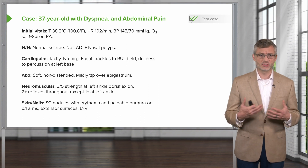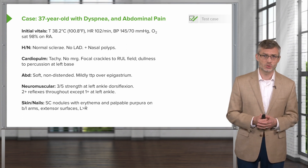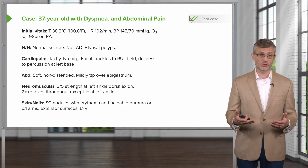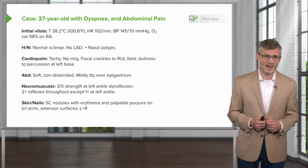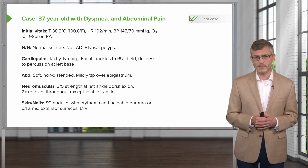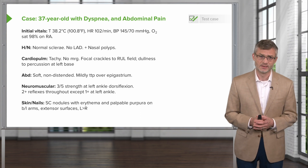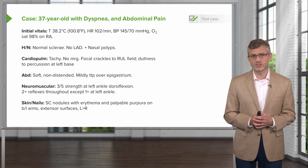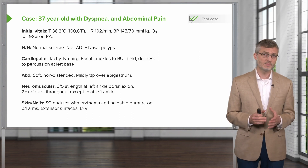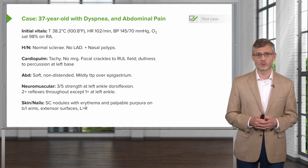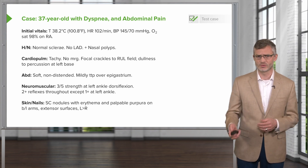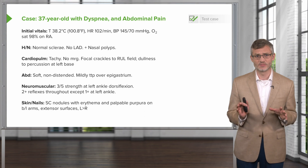Her abdomen reveals a soft, non-distended belly, though she is mildly tender over the epigastrium. In the neuromuscular exam, we find three out of five strength at the left ankle with dorsiflexion, with two-plus reflexes throughout except one-plus at the left ankle. Her skin and nail exam reveals subcutaneous nodules with erythema and palpable purpura on the bilateral arms at the extensor surfaces, a little more on the left than the right.